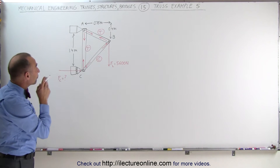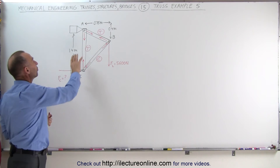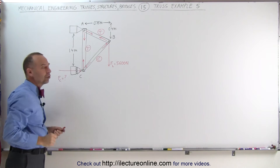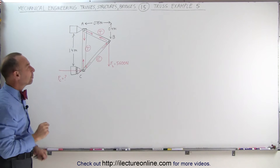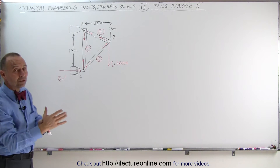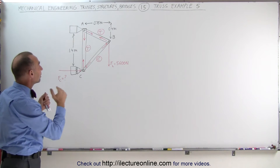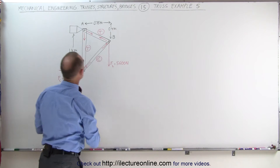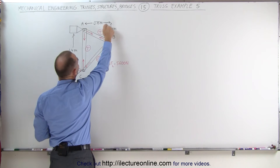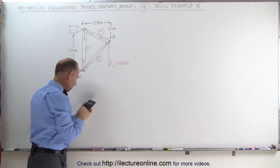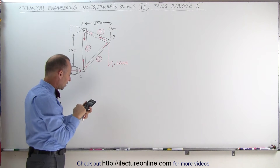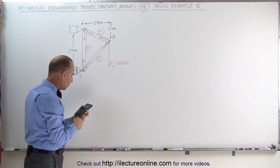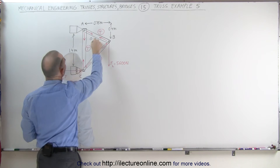Next, what we want to do is find the length of each of the three members. Notice that we already have this member right here at 1.4 meters, but we don't have the other two. We want to do that because we can solve the problem by associating the magnitude of the forces on the members to the length of the members themselves. Using the Pythagorean Theorem, notice that this here is 0.75 and this is 0.4. That's 0.75 squared plus 0.4 squared — take the square root of that — we get 0.85 meters.